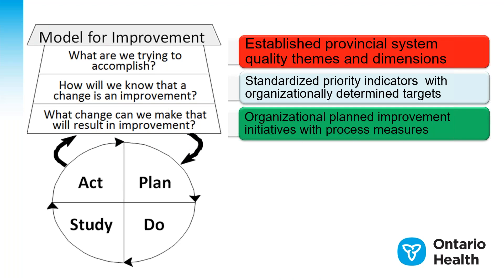Here is how the model for improvement maps onto the Quality Improvement Plan. Question 1 — what are we trying to accomplish — maps to the established provincial system quality themes and dimensions. Question 2 — how will we know that change is an improvement — is reflected in the QIP as standardized priority indicators with organizationally determined targets. Question 3 — what change can we make that will result in improvement, the focus of this video — is reflected in the QIP as organizational plan improvement initiatives with process measures.